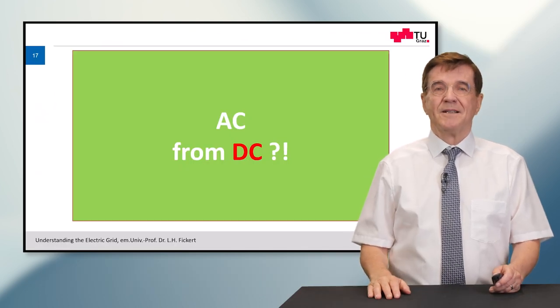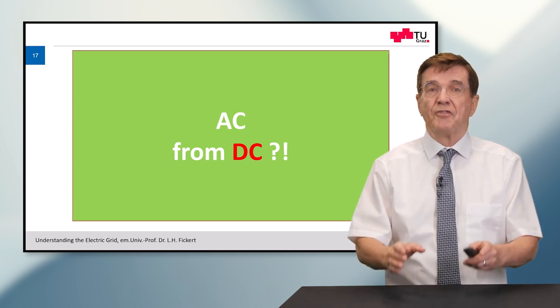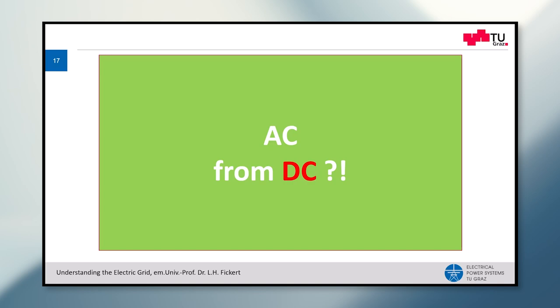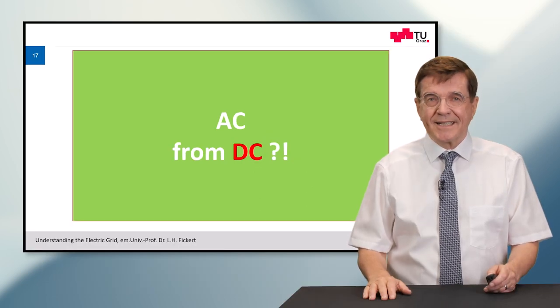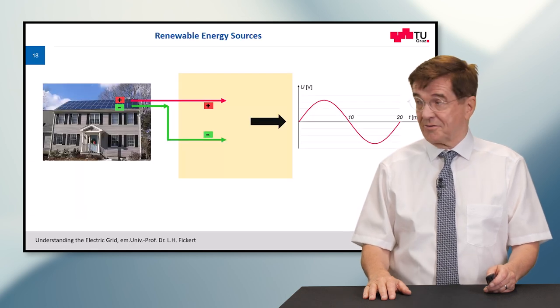But nowadays modern renewable sources like photovoltaics, fuel cells, also sometimes wind farms, produce primary DC current. How to turn the DC current into AC? And this is done as follows.